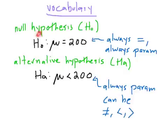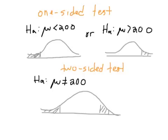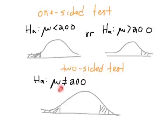There's something called a one-sided test and something called a two-sided test. If the symbol you write for Hₐ is a less-than or greater-than, that's called a one-sided test, because you end up shading just to one side. If the symbol you end up with is not-equal-to, that's called a two-sided test, because you shade to both sides. You'll see these terms in the book, but that's all they mean.